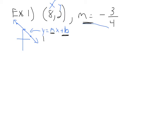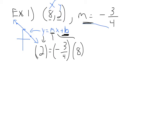Luckily, we know what y is — y is two. And whenever we substitute in, we should always use parentheses. So: y equals mx plus b becomes (2) equals (-3/4)(8) plus b. We knew y, we knew m, and we knew x. So we can solve this equation for b and figure out what the y-intercept is.